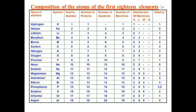Starting with hydrogen: the symbol is H, atomic number is 1, number of protons is 1, and neutrons is 0. So protons and electrons are both 1 and neutrons are 0.